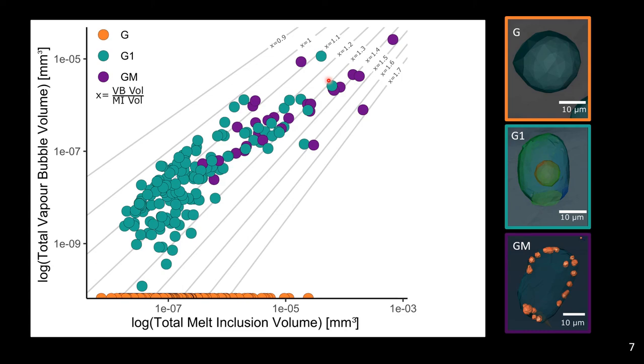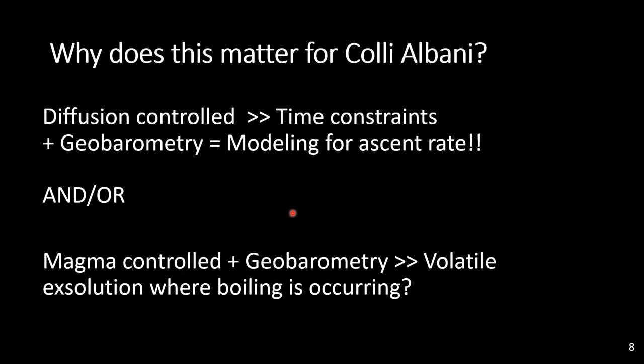So what does this all really mean in terms of Colli Albani? I'm studying this volcano so there has to be some sort of reason why this matters for it. If it is indeed diffusion controlled, this gives us time constraints, and if we combine these time constraints with some geobarometry then we can model for ascent rate, and this can really help understand maybe this is the key for why we have a mafic alkaline volcano having these large volume explosions. Or if it's magma controlled, if we combine this with geobarometry then we have volatile exsolution pathways and this can tell us where boiling is really occurring. This is also something that could be really helpful in understanding why we're getting this explosive behavior from Colli Albani.